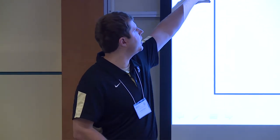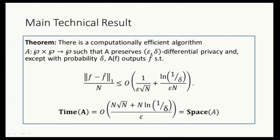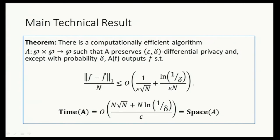Here's a summary of the technical results. There is a computationally efficient algorithm that takes as input an integer partition, outputs a partition, and preserves epsilon-delta differential privacy. The L1 error, normalized by n (the number of users), scales with 1 over epsilon times root n in the upper bound, plus a ln(1/delta) factor. The running time is proportional to n times root n over epsilon, and similarly for space requirements. Note that p is the set of all integer partitions — we don't want to publish the exact number of users in the data set.